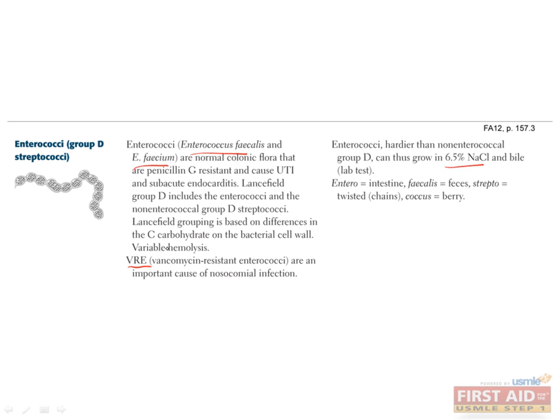E. faecalis and E. faecium are clinically relevant, mostly causing disease in hospitalized or immunocompromised patients. UTIs in catheterized patients, post-surgical peritonitis, and subacute bacterial endocarditis are common infections caused by these organisms. Vancomycin-resistant enterococci (VRE) is an increasing problem in the hospital, found in approximately 20% of E. faecium isolates.